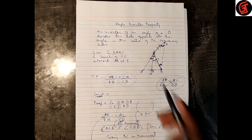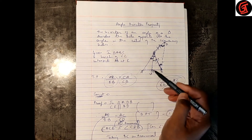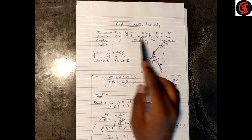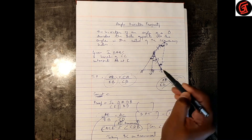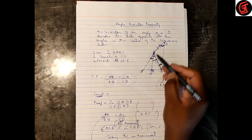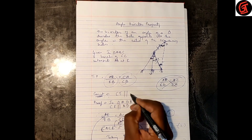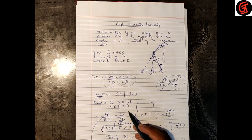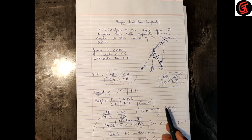Let me quickly revise. For the Angle Bisector Property, I drew a triangle with an angle bisector, wrote the given information, and stated what to prove — because the angle bisector divides the angle into two equal parts, CE divides the opposite side AB such that AE upon EB equals AC upon CB. The construction used was the Basic Proportionality Theorem.